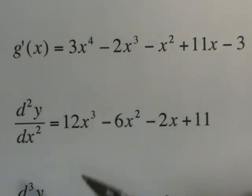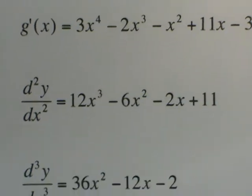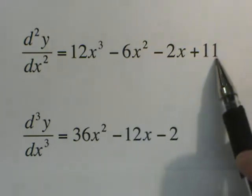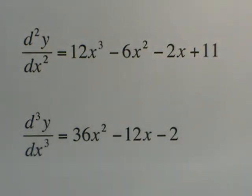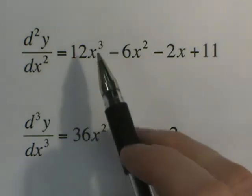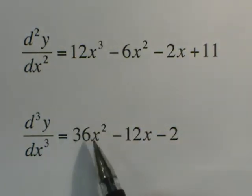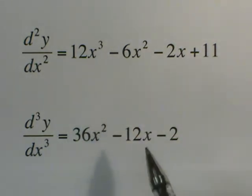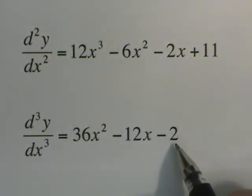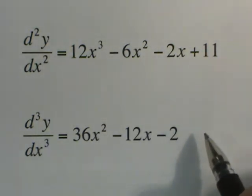And then I want to get to the third derivative. So a third derivative would just be a matter of taking a derivative of this. Notation would be d cubed y over dx cubed. And we would say 3 times 12 is 36x to the 2nd, because 3 minus 1 is 2. 2 times negative 6 is negative 12x to the 1st. Derivative of negative 2x would be just negative 2, and the 11 would drop out. So our third derivative would be 36x squared minus 12x minus 2.